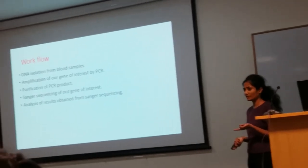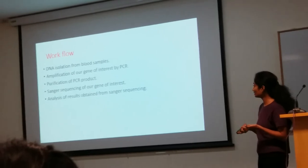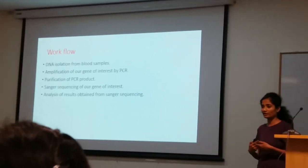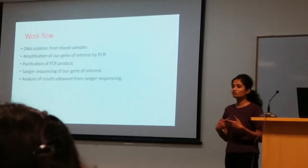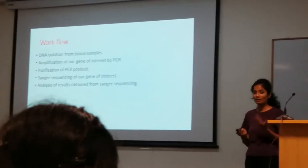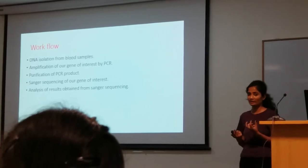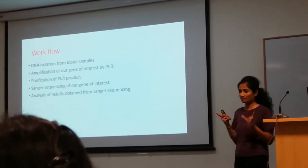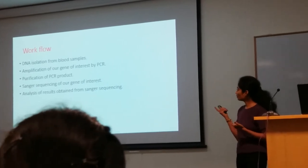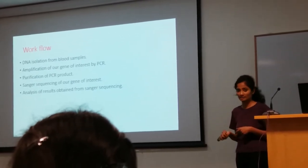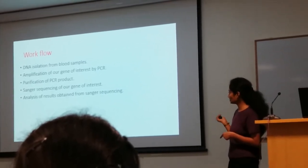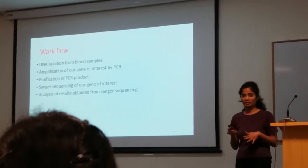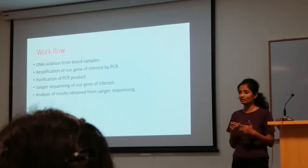We perform PCR amplification of our region of interest. Then we perform Sanger sequencing — after getting the PCR product, we do PCR purification, because after PCR there will be dNTPs still remaining in the PCR product. We only require the amplicon of our desired region, so we purify the PCR product and send it to Sanger sequencing. The results from Sanger sequencing are received in FASTA format.